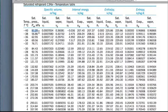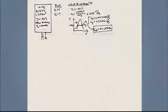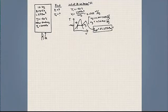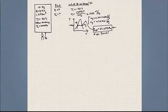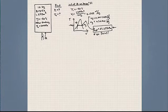So the pressure at state 1 is 51.25 kilopascals — that answers the first part of our question. Now after heating, we have a certain temperature that it reaches, and we need to find that temperature at state 2.